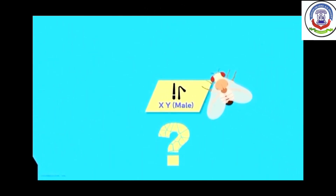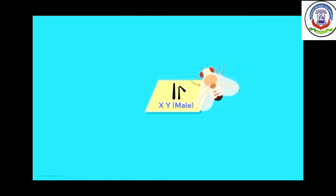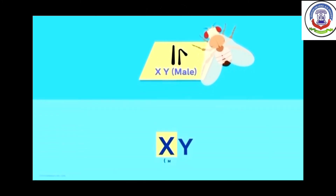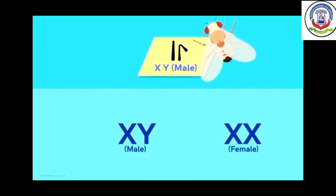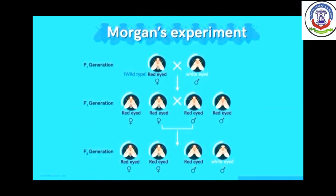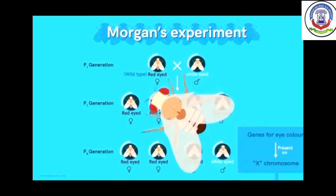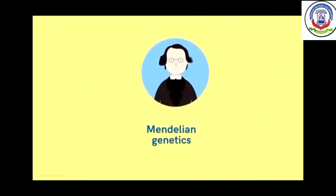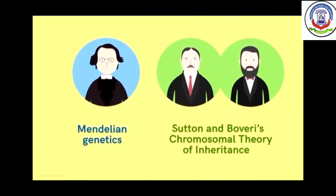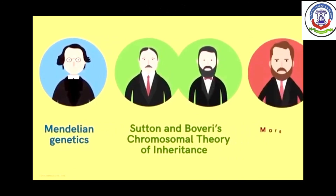If the alleles were present on the Y chromosome, the trait would be visible only in males, because in Drosophila males have one X and one Y chromosome while females have two X chromosomes. To summarise, this experiment helped Morgan prove that genes are present on chromosomes, that eye-colour genes are on the X chromosome in fruit flies, and that genes are passed from one generation to the next. This confirmed both Mendelian genetics and Sutton and Boveri's chromosomal theory of inheritance.